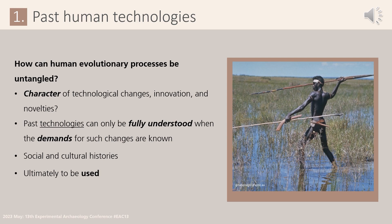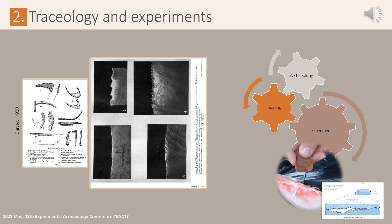Although the demands for such changes can vary, archaeological artifacts were ultimately produced to be used. Experimental replications and traceology — the study of traces of use on artifacts — are key disciplines in reconstructing the use of past technologies. These disciplines focus on three main interrelated aspects: the archaeological record, imaging methods and techniques to identify and characterize different types of traces of use, and experimental studies that aim to replicate the use of tools and reproduce the diagnostic traces. Based on these experiments, traces of use are known to correlate with different contact materials and motions, providing a crucial reference collection against which artifacts are compared.